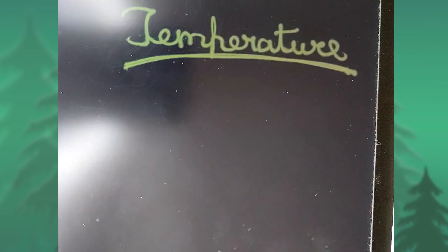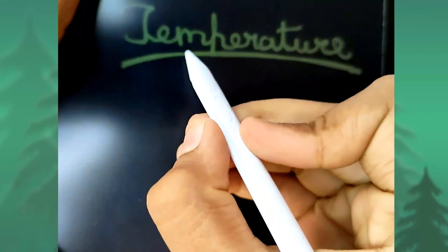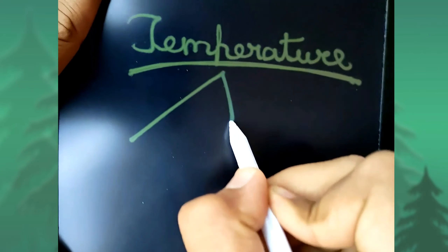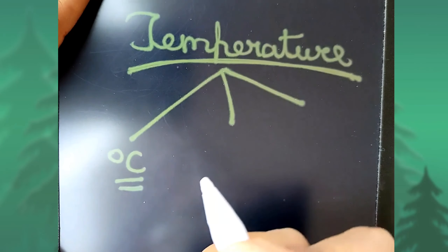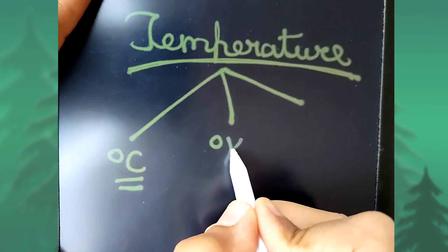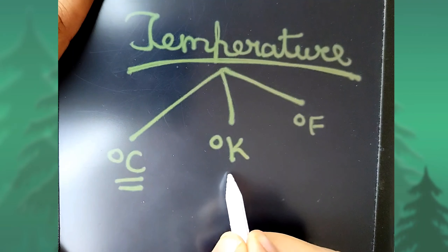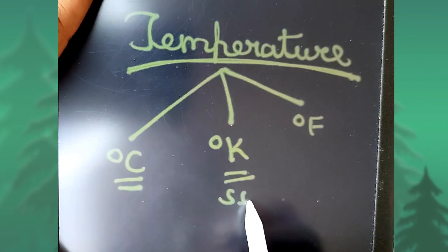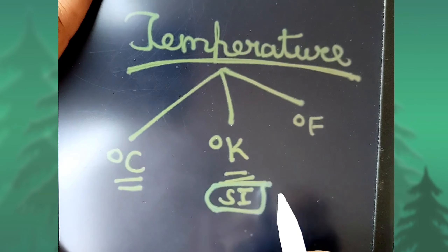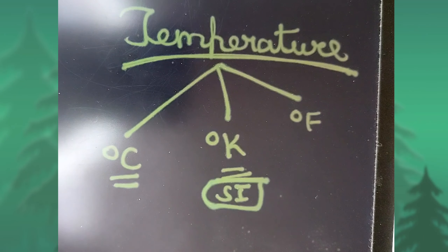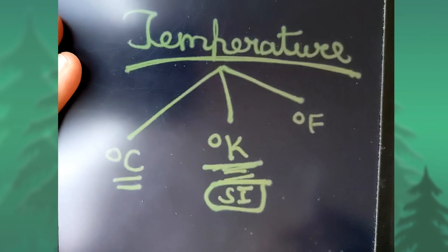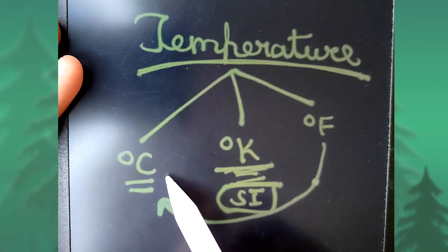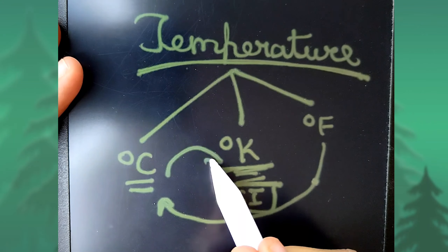There are three units of temperature: degree Celsius, which is mostly used in India, degree Kelvin, and degree Fahrenheit. Degree Kelvin is the SI unit of temperature, so if anyone asks you what is the SI unit of temperature, it is degree Kelvin. First we will learn how to convert Fahrenheit into Celsius and how to convert Celsius into Kelvin.